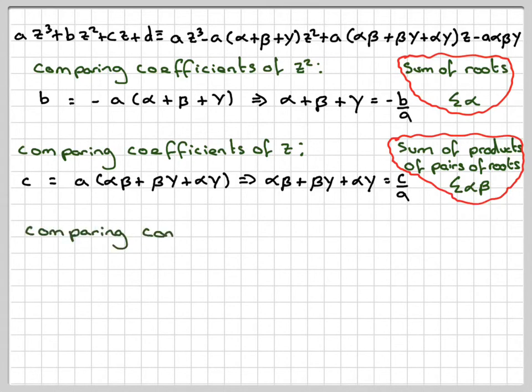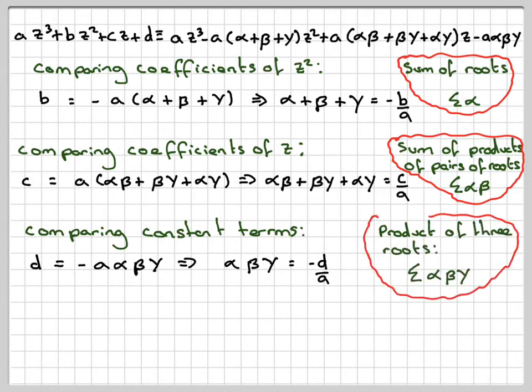And then comparing the constant term, the constant term on this one is d, the constant term on this one is minus a times alpha beta gamma. So that gives you alpha beta gamma is minus d over a.